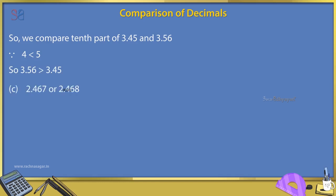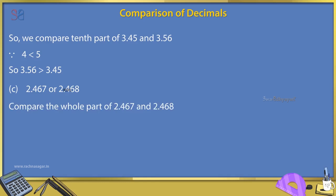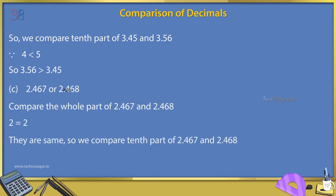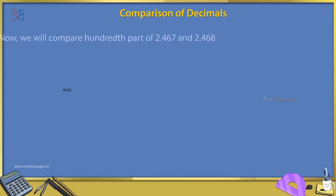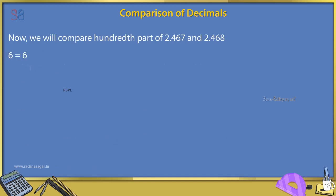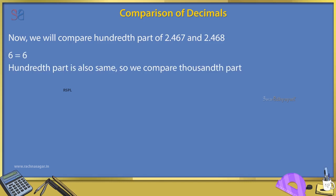C. Compare 2.467 and 2.468. Whole parts: 2 = 2. Tenth parts: 4 = 4. Hundredth parts: 6 = 6. Compare thousandths: 7 < 8. Hence 2.467 < 2.468.